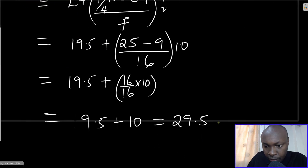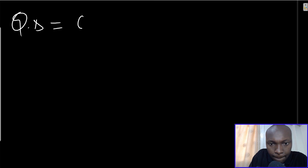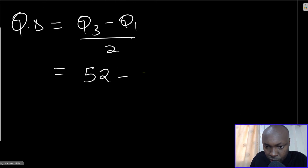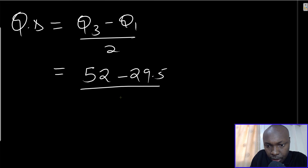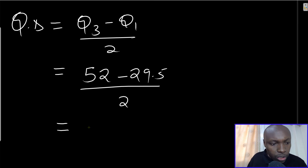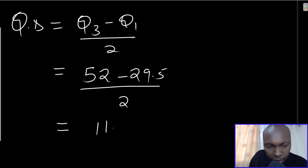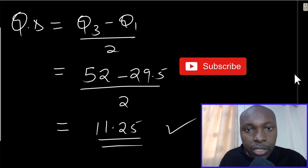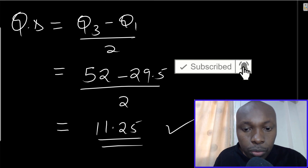Now we can calculate the quartile deviation. QD = (Q3 - Q1) / 2 = (52 - 29.5) / 2 = 22.5 / 2 = 11.25. So the quartile deviation is 11.25. That is how you calculate the quartile deviation of grouped data. Thank you.